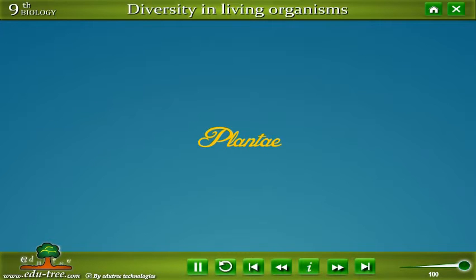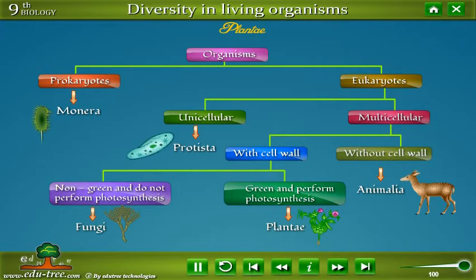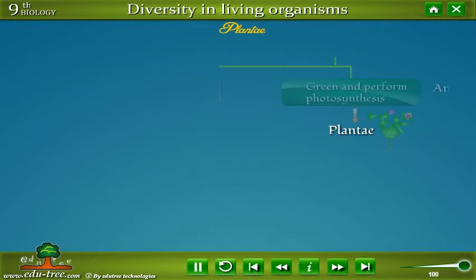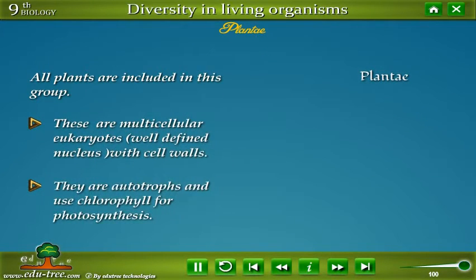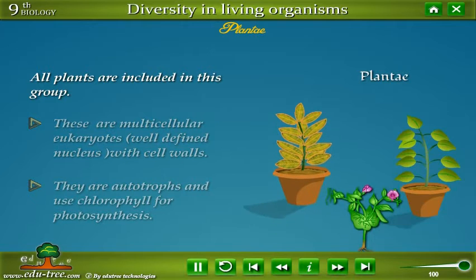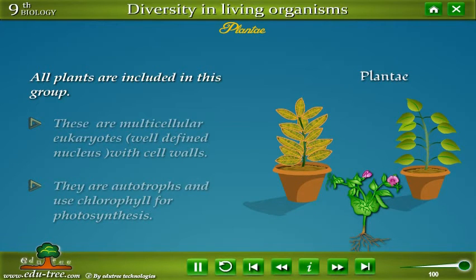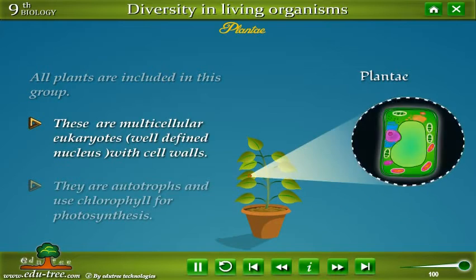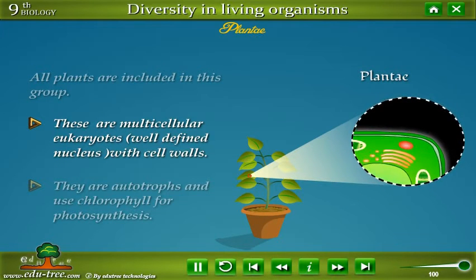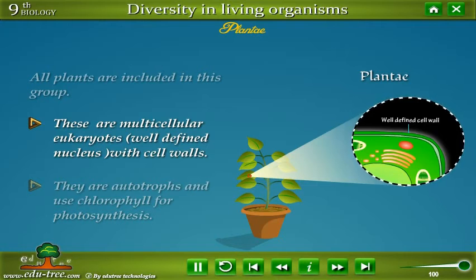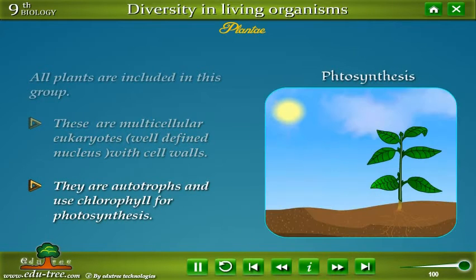Plant Kingdom. All plants are included in this group. These are multicellular eukaryotes with cell walls. They are autotrophs and use chlorophyll for photosynthesis.